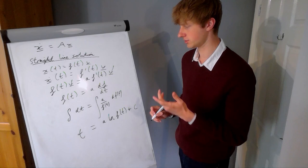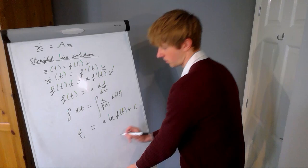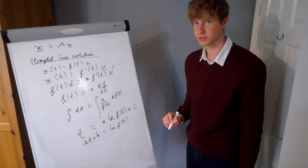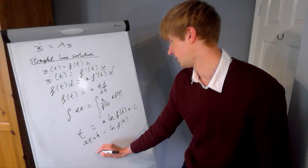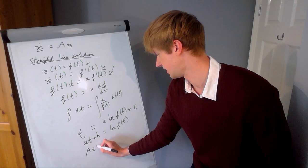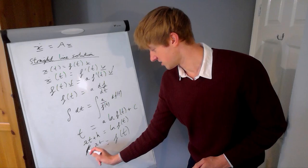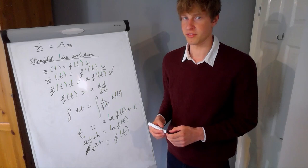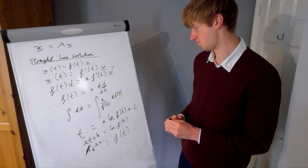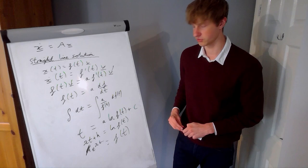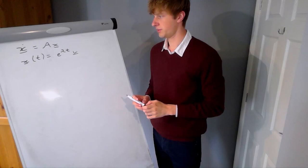Calling 1/a = λ for convenience and rearranging: λt plus some constant equals ln(f(t)). Raising both sides as an exponent gives f(t) = k·e^(λt). We can ignore the constant k because it only affects the magnitude of the vectors, not the qualitative behavior over time. The really important thing is what λ is — specifically whether it's positive or negative — because that determines whether these straight-line solutions decay or grow exponentially over time.